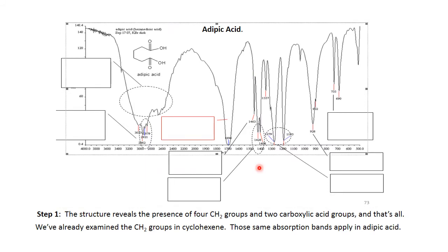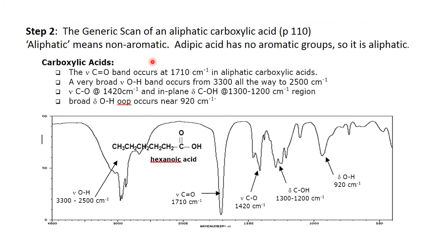That brings us to adipic acid, the product. Again, we look at the structure and identify what functional groups are present. There are four methylene groups — one, two, three, four — and there are two carboxylic acid groups, and that is all. We've already examined the methylene groups in cyclohexene, so those same absorption bands will be in adipic acid and you should be able to fill them in on this scan.